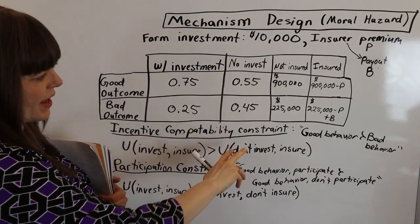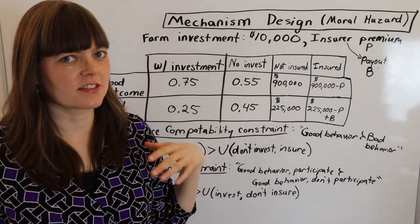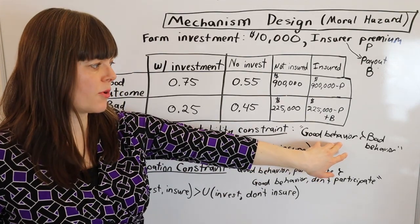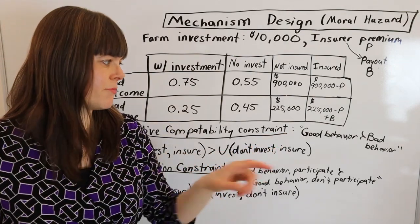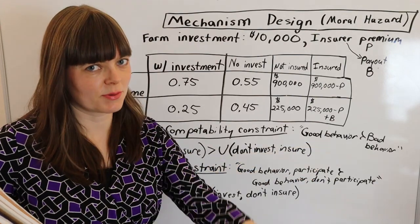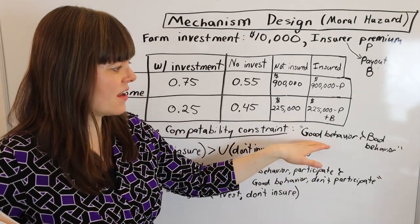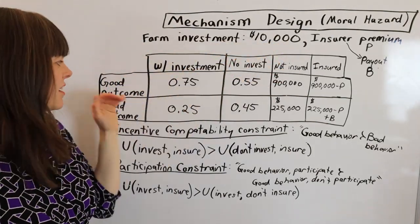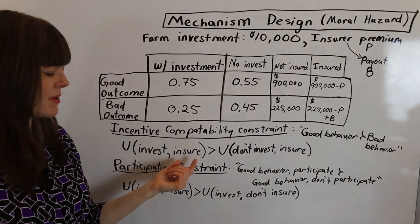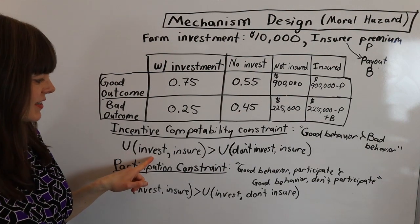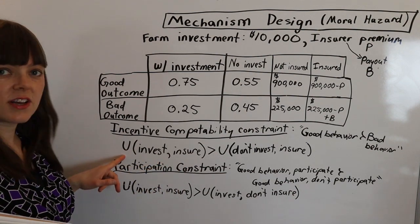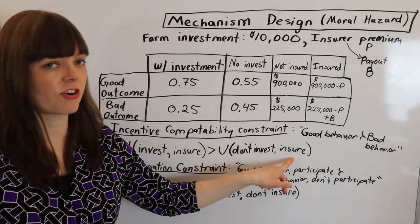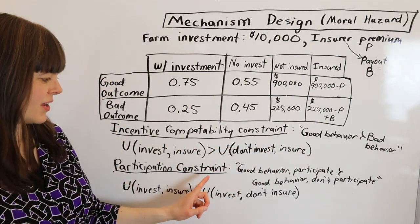For a behavior-type problem associated more with moral hazard than adverse selection, the incentive compatibility constraint is that good behavior from the principal's perspective — as experienced by the agent — is preferred to bad behavior. Good behavior is defined by the principal as the agent investing in the technology that increases the chances of a good outcome. So the incentive compatibility constraint is: utility of investing and insuring must be greater than or equal to the utility of not investing and insuring.